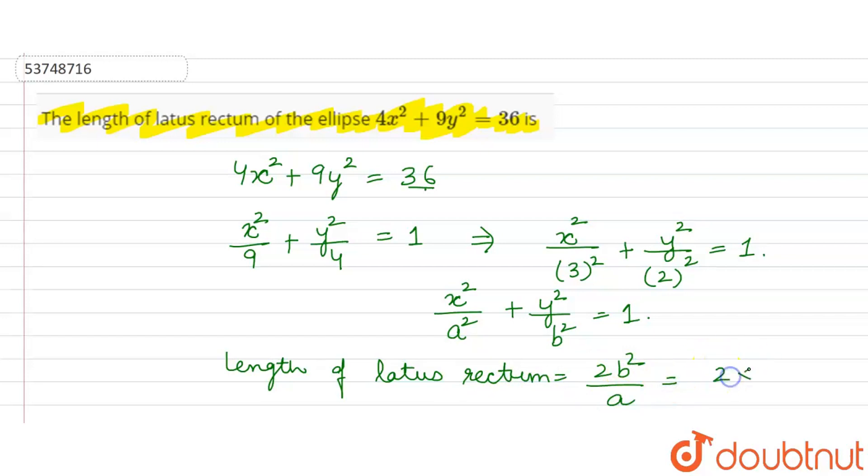So, what should we do? 2 into b², which is 4, upon a is 3.